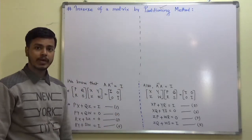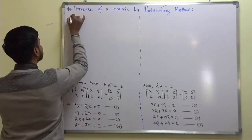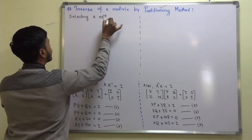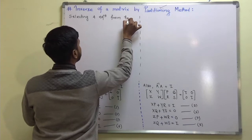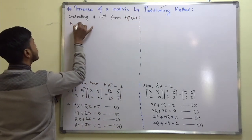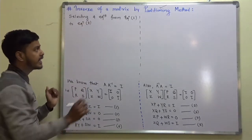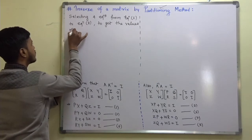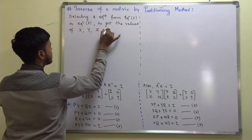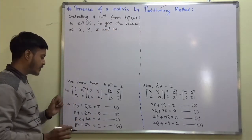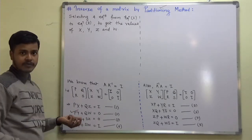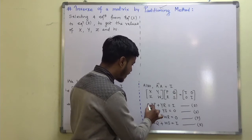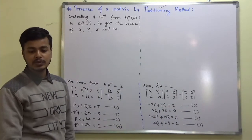Selecting four equations from equation one to equation eight to get the values of X, Y, Z, and W — I am going to make use of equation two, then equation four, then equation five, and equation seven.